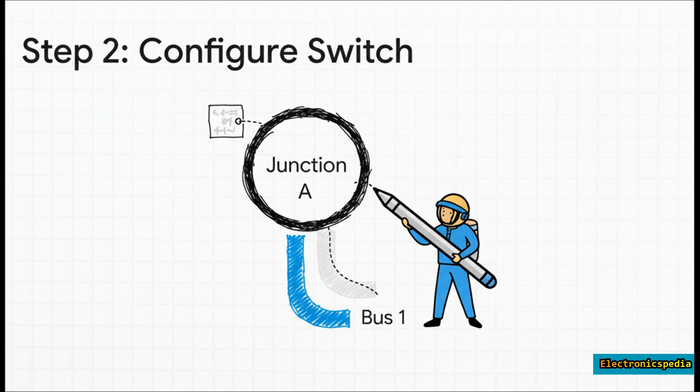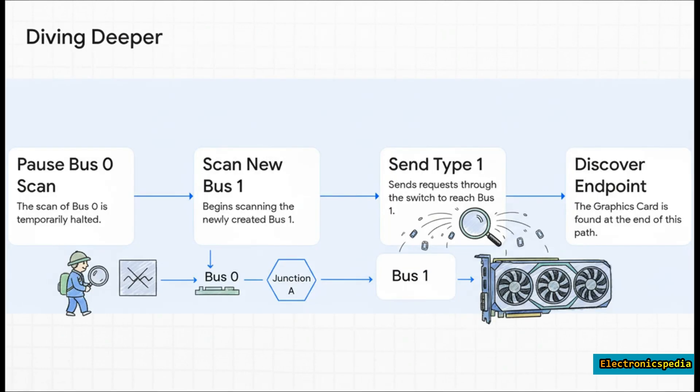And this right here, this is the depth-first part of the search in action. The explorer immediately pauses its scan of Bus 0. It doesn't bother looking for anything else there just yet. Instead, it dives deeper down that first path of Junction A.